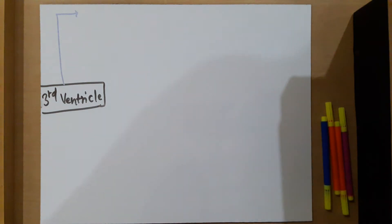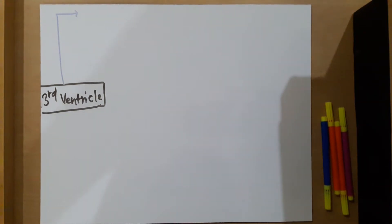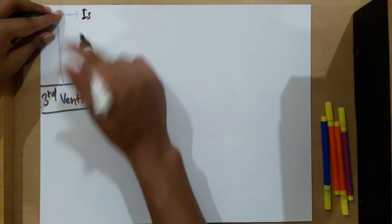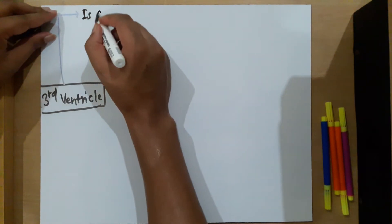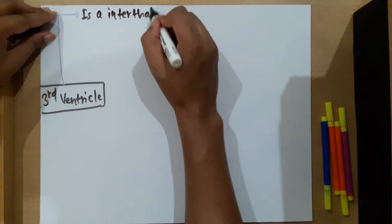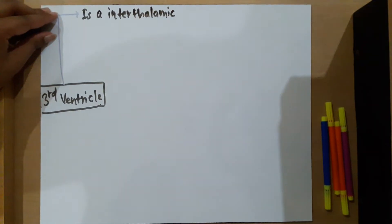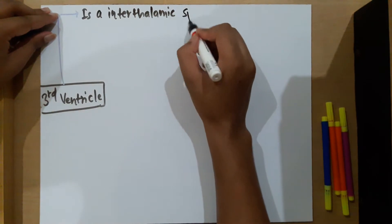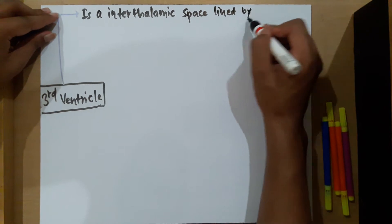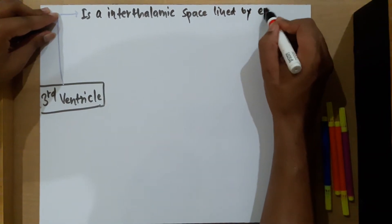So what is the third ventricle? As discussed in the previous video, the third ventricle is an interthalamic space lined by ependyma.